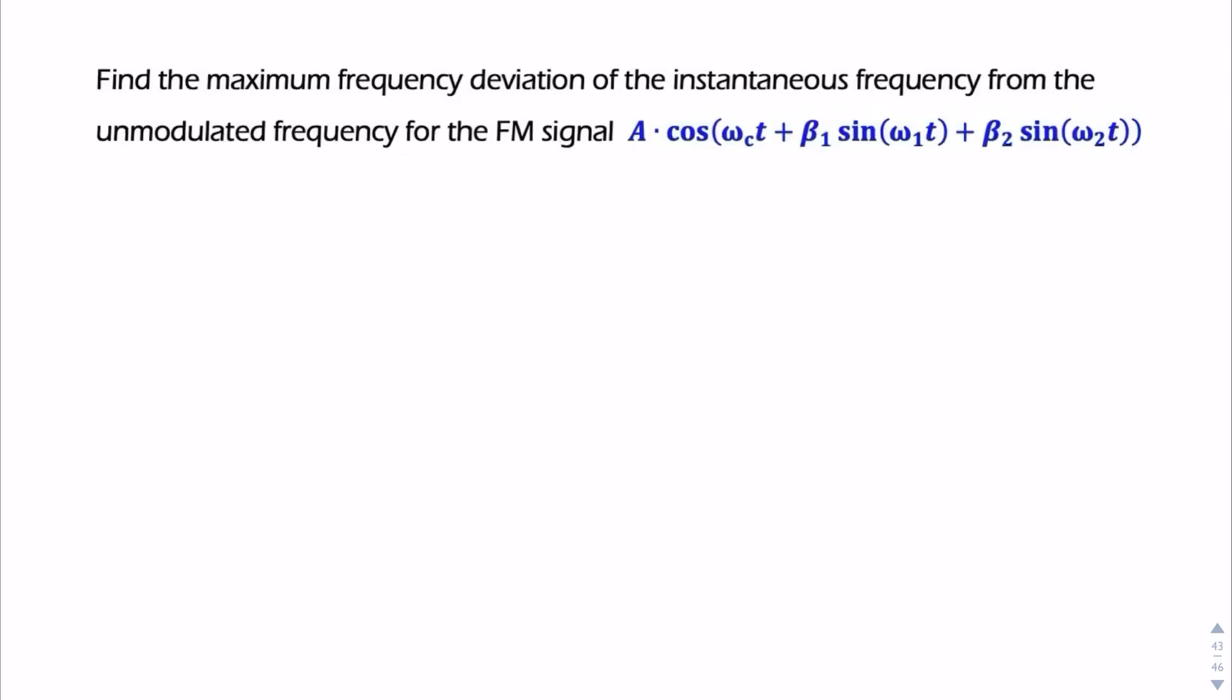This isn't a numerical question. Here we're given an FM signal with two components, with two modulation indices, beta 1 and beta 2. And the question is, find the maximum frequency deviation.